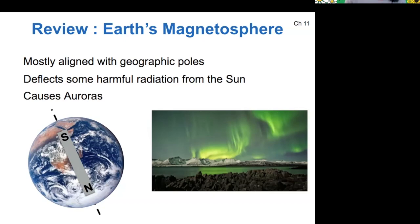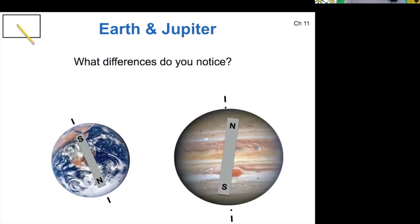Here's an image of Earth versus Jupiter's magnetic field. Remember, they're not actually bar magnets, but we can use bar magnets to describe their position and direction. A question for you: just jot down any differences you notice between these two.